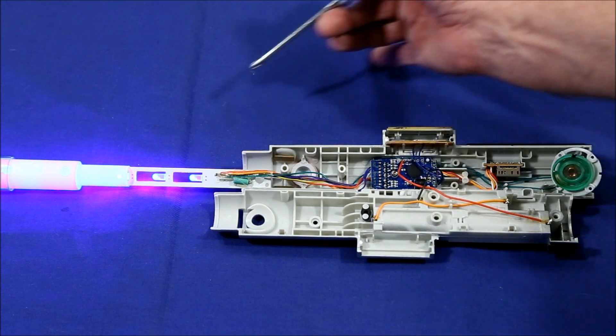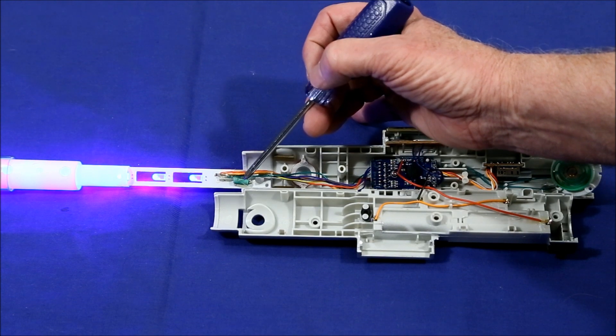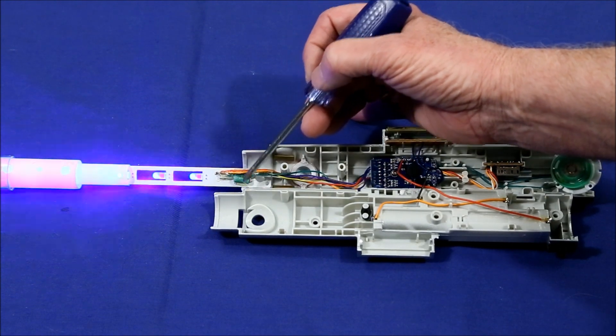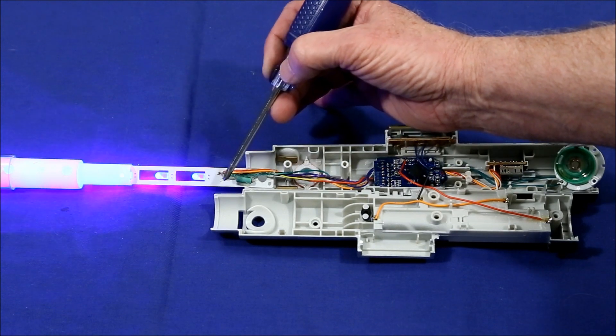The other is the little green cylinder here which is the clash sensor. It creates flashes when the blade is struck.